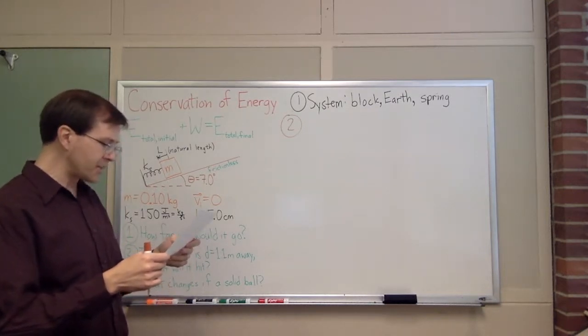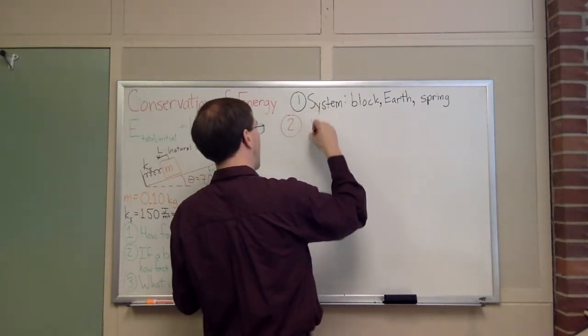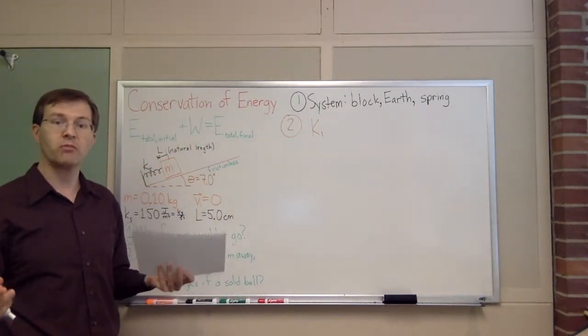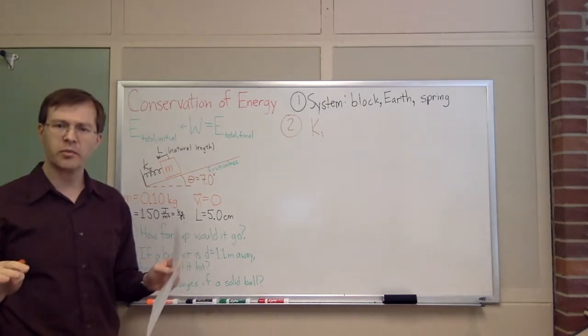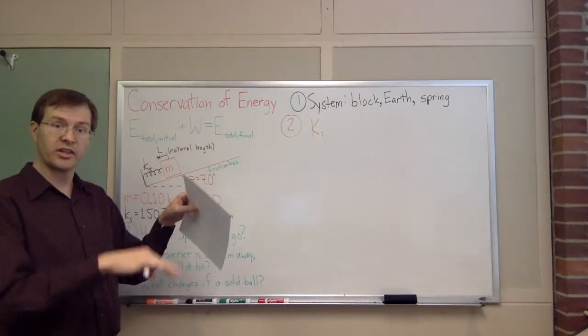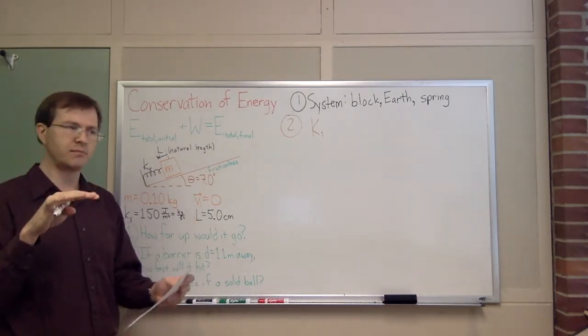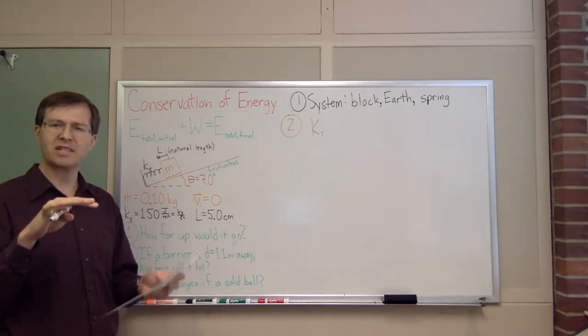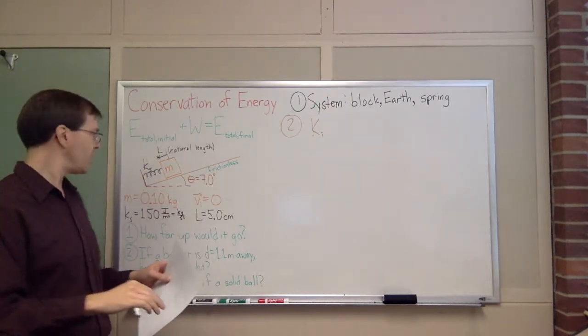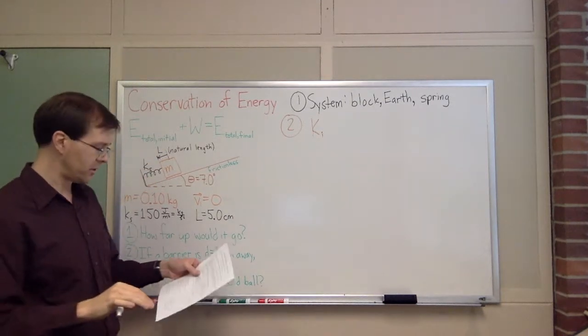Any object whose speed changes, you want to include a term for its kinetic energy in the story. So, we're going to have the initial kinetic energy of the block M to be an important term, one form of energy we're going to track. Now, technically, we could also track the Earth's kinetic energy. In practice, kinetic energy, if you have a large object interacting with a much smaller object, the much greater mass object, its kinetic energy is basically constant. We're going to leave out the kinetic energy of the Earth. Similarly, I'm going to assume that the spring is massless.